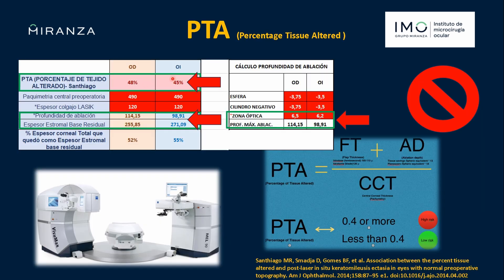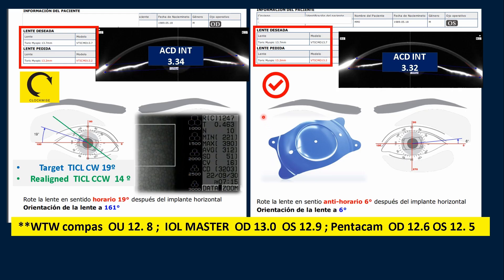The pachymetric map in both eyes shows pachymetry of less than 500 microns. The PTA index study for these ametropias proposes ablations of 100 to 115 microns, leading to an ectasia risk of over 40%. Therefore, this PTA index contraindicates keratorefractive surgery in our judgment, which is why we recommended phakic lens implantation in both eyes.